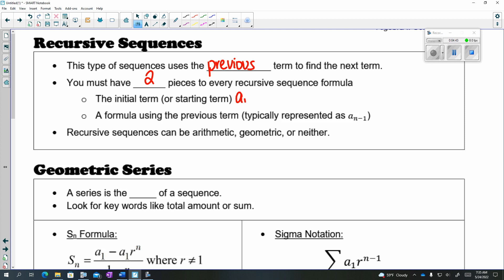so typically we use A1. Every once in a while you may see A sub 0 instead, but that's your starting term. And then you have to have a formula using the previous term, which is typically shown with A sub n minus 1. And there are two examples of that on the front of this packet because I showed you what it would look like for both an arithmetic and a geometric.